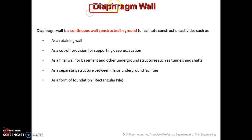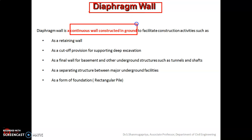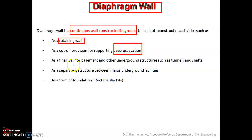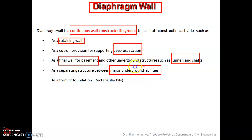A diaphragm wall is a continuous wall which is constructed in the ground to facilitate construction activities. It acts as a retaining wall and it can be used as a cut-off provision for supporting deep excavation. It is used as a final wall for the basement as well as for underground structures like tunnels and shafts. It is used as a separating structure between major underground facilities and also acts as a form of foundation, especially as a rectangular pile.